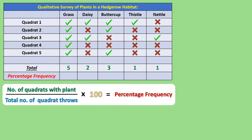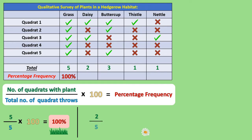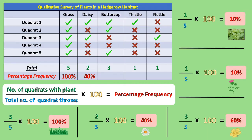You can use a calculator to help you with these calculations. Grass could be found in five quadrats; a total of five quadrats were thrown, so after dividing five by five, we multiply the answer by 100 to give grass a percentage frequency of 100%. To find the percentage frequency of daisies, we put two into the formula because daisies could be found in two of the quadrats. A total of five quadrats were thrown, so after dividing two by five, we multiply by 100 to give daisies a percentage frequency of 40%. Check out the remaining calculations for buttercups, thistles and nettles. Whenever a quadrat is thrown in this habitat, there's a 60% chance of it landing on a buttercup and a 10% chance of it landing on a thistle or a nettle.